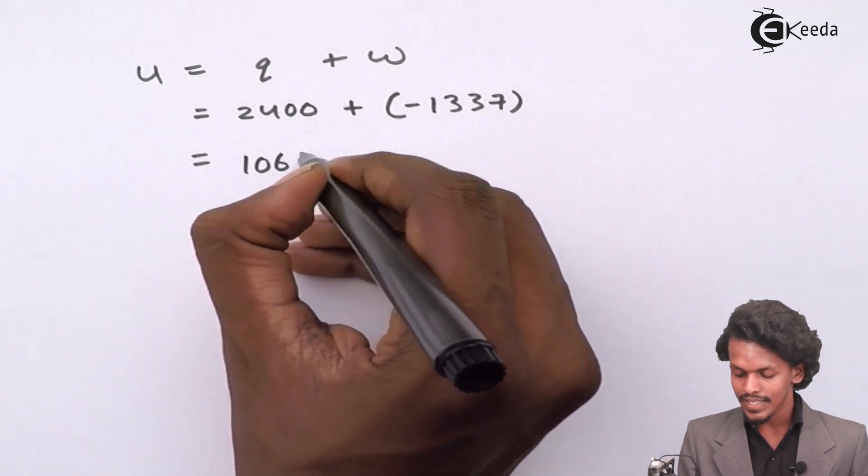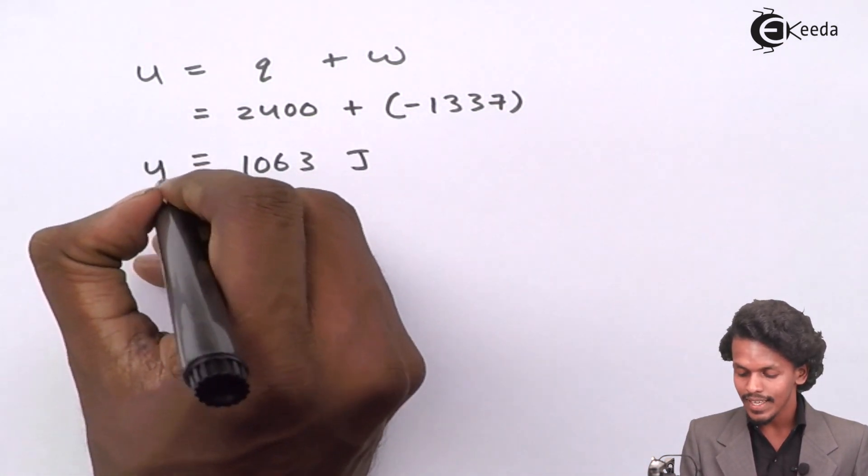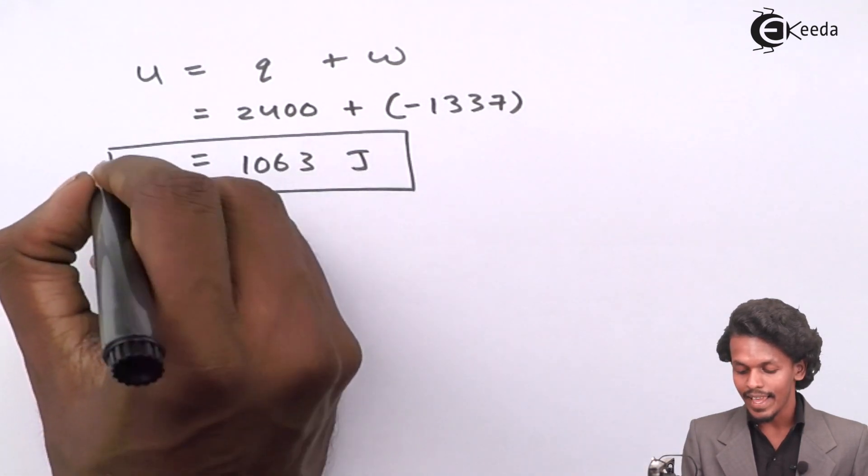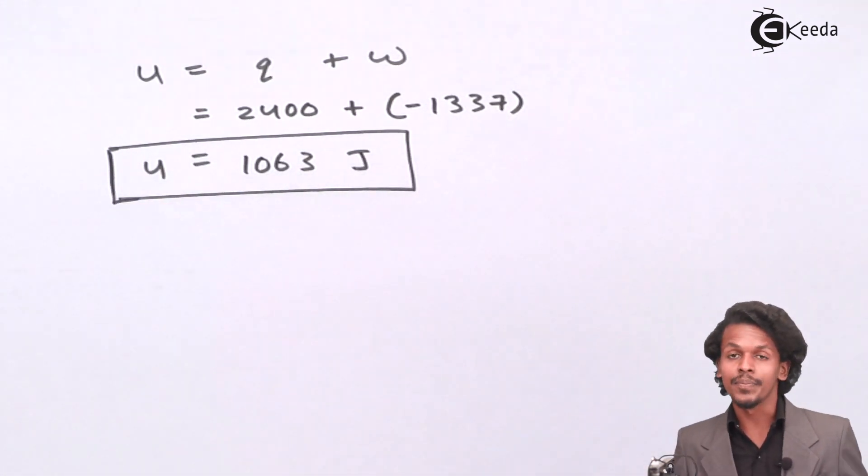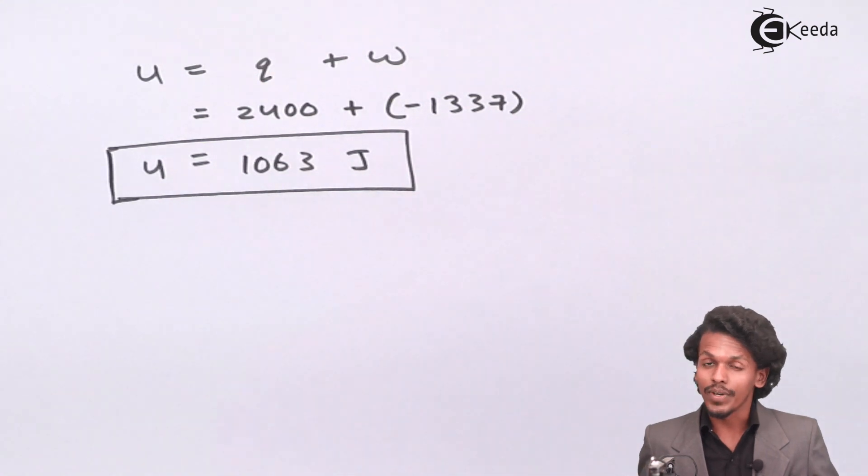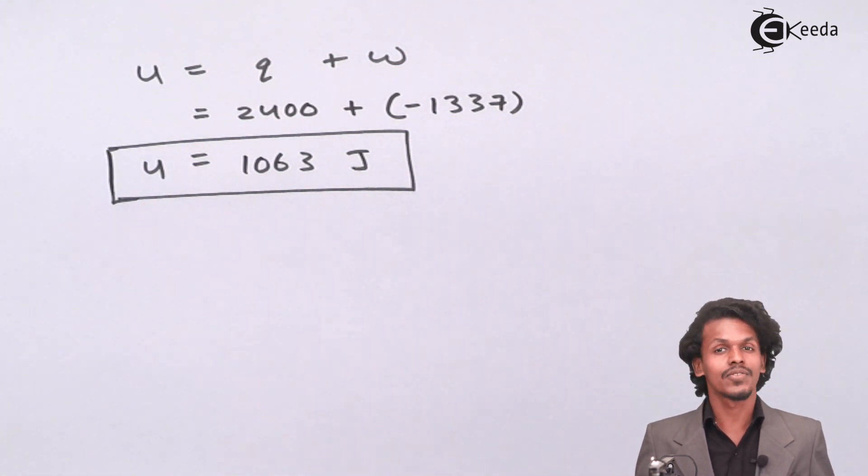The answer is 1063 joules. This is the internal energy of the system we have calculated. Thank you friends for watching this video. I hope you have an idea of how to solve this kind of numerical. This was one of the simplest numericals. Share this video with your friends and don't forget to subscribe to the channel. Thank you so much.